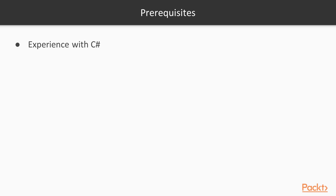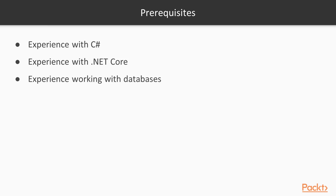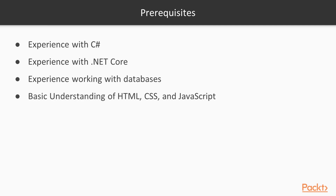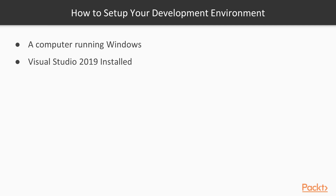Before you start this course it is very important to have some knowledge of C-Sharp, to have worked with .NET Core in the past, especially along with Entity Framework Core. This course takes the basics for granted and moves on to advanced concepts and new C-Sharp features. In this course we will also use some HTML, CSS and JavaScript. You can view this course and follow the examples in a computer running Windows and the latest version of Visual Studio.